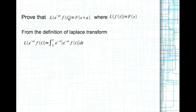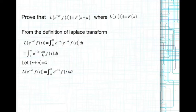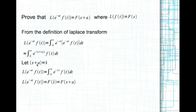How do you prove that? Go back to the definition of Laplace transform. The Laplace transform of e to the power of minus a t times f of t is the integral from 0 to infinity of e to the power of minus s t times e to the power of minus a t times f of t dt. You can combine these exponentials. Then letting s plus a equal s-hat, this expression becomes the integral from 0 to infinity of e to the power of minus s-hat t times f of t dt, which by definition is F of s-hat. We then replace s-hat by s plus a and there we have it.